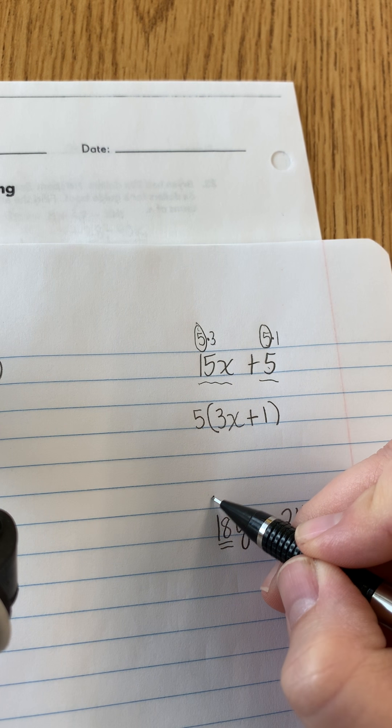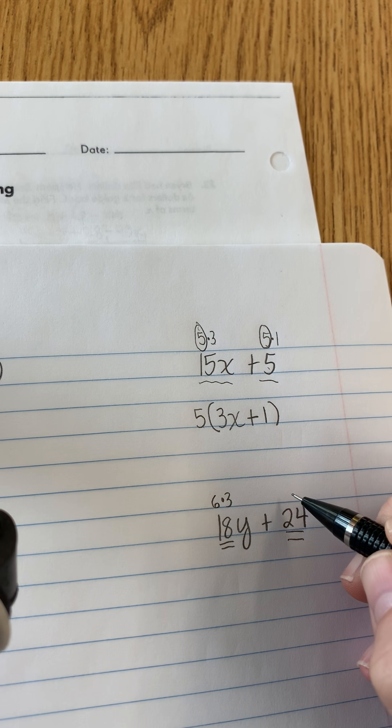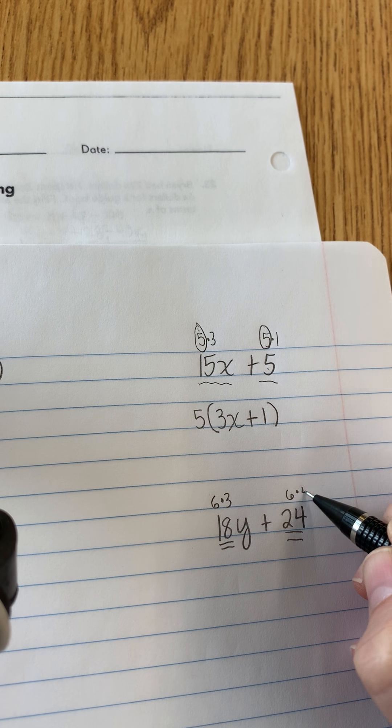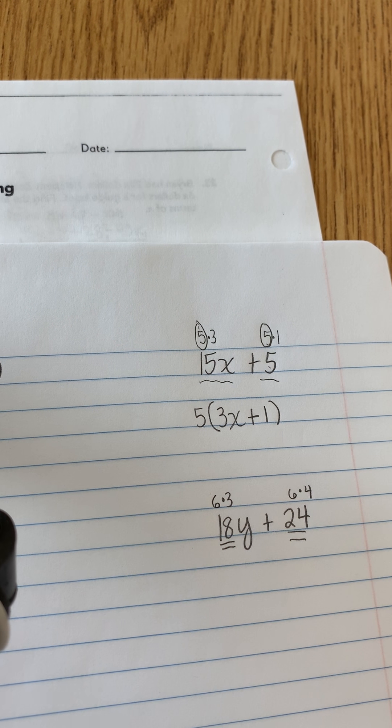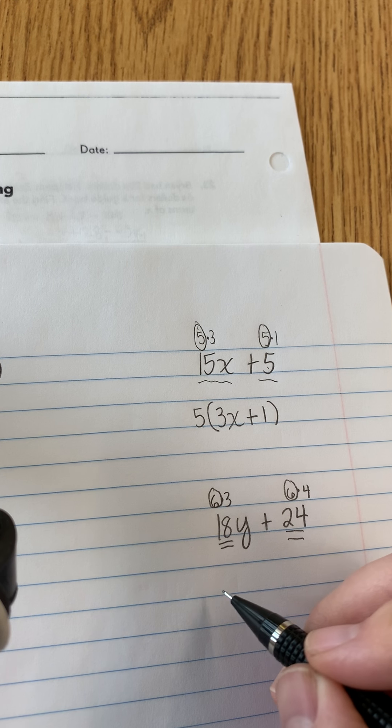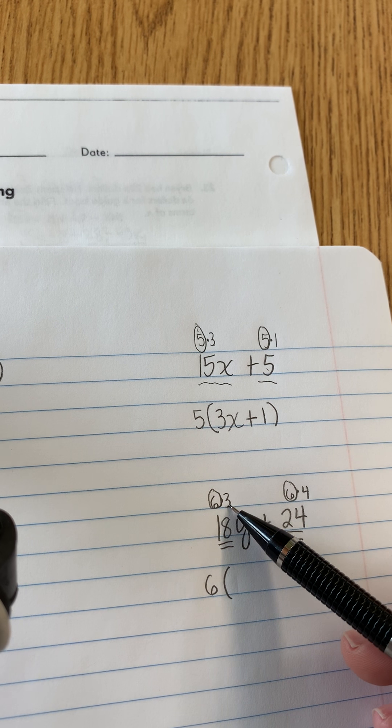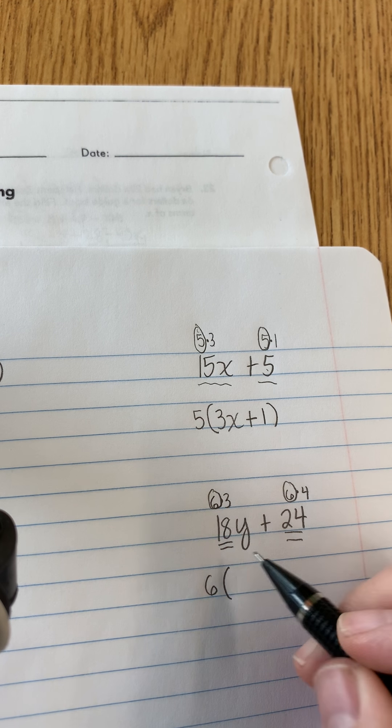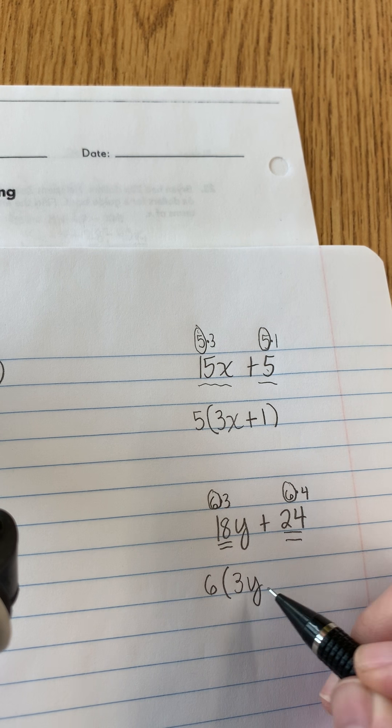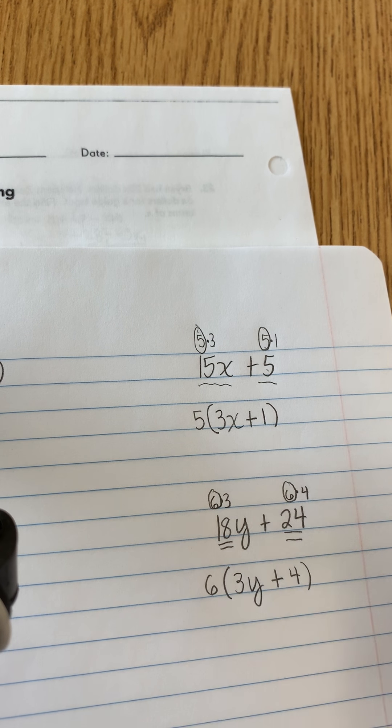So what you would do is to get 18 would be 6 times 3, right? To get 24 would be 6 times 4. Make sense? They both have a 6 so I'm going to factor out the 6. That's what's going to go on the outside. Now on the inside we have a 3 left. So instead of 18y we're going to write 3y plus we have a 4 left, 4.